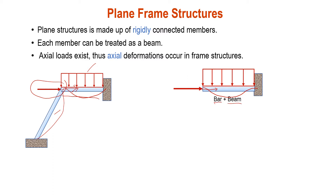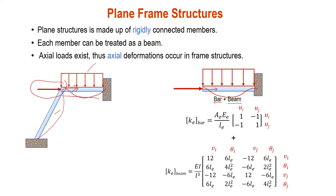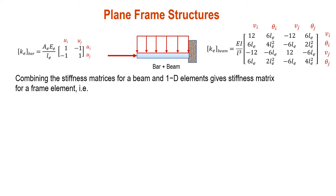So we would say that this structure is a combination between the bar problem and the beam problem. For the K matrix, it is just a combination between the bar K matrix and the beam K matrix. Thus, by combining the stiffness matrix for a beam and 1D bar elements, we get the stiffness matrix for a frame element.